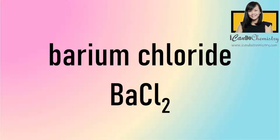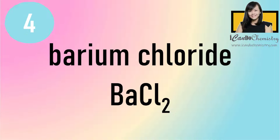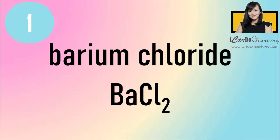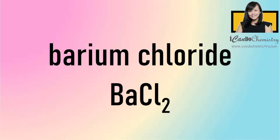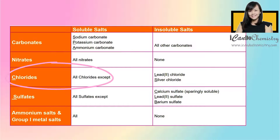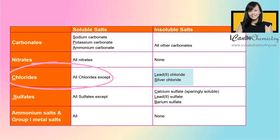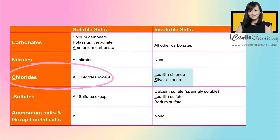5. Barium chloride. Barium chloride is a soluble salt. All chlorides are soluble except lead 2 chloride or silver chloride. Barium chloride is neither, hence it must be soluble.